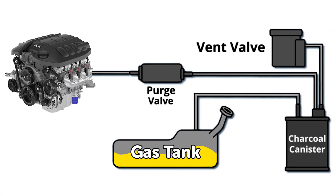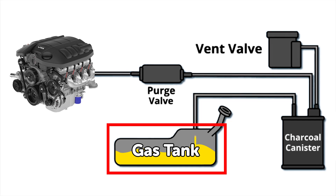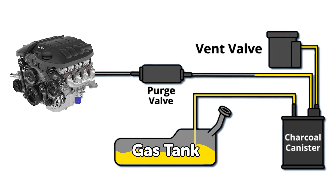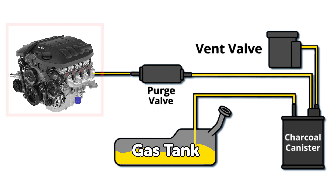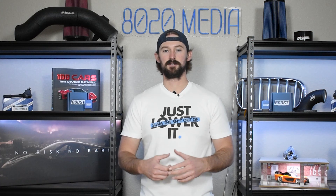The EVAP system pulls fuel vapors out of your gas tank and routes them into your engine, where they're mixed with the incoming air and combustion takes place so the vapors are burned through.